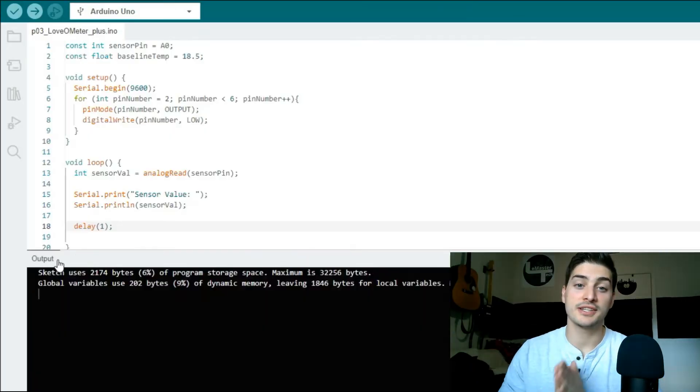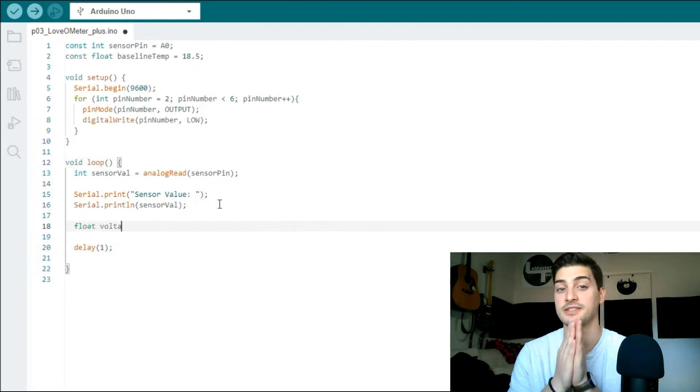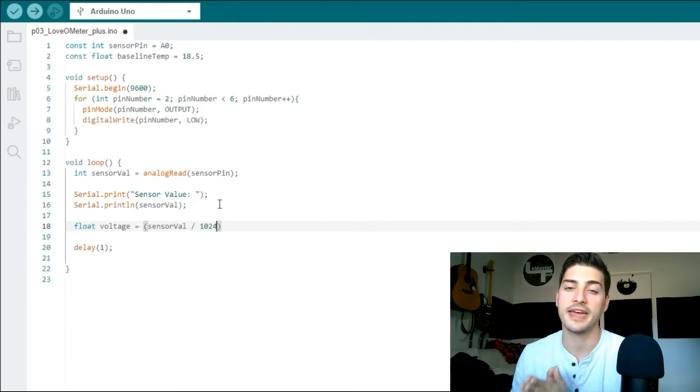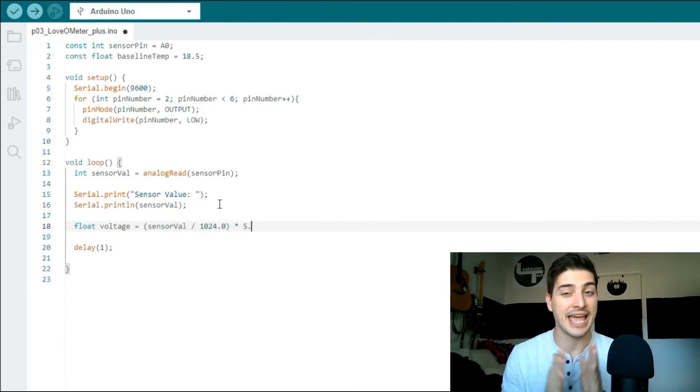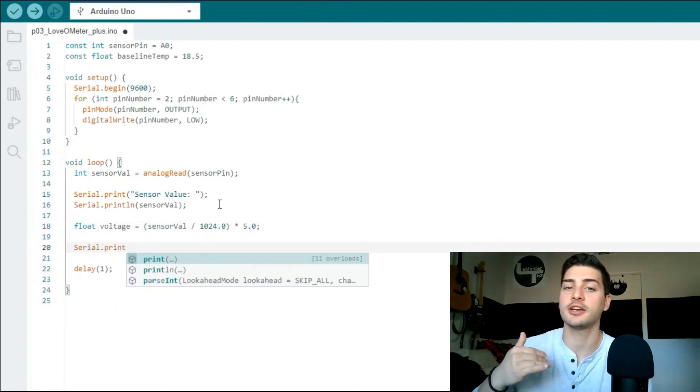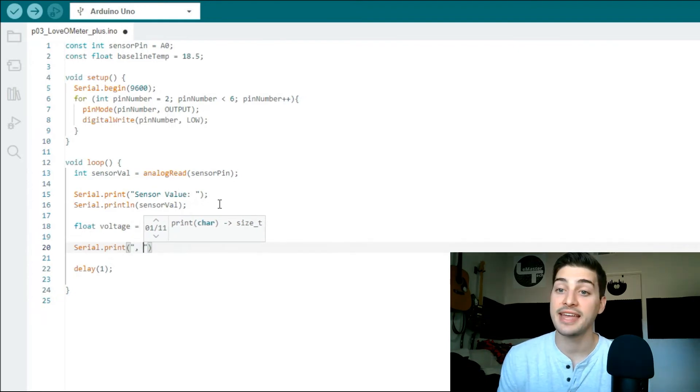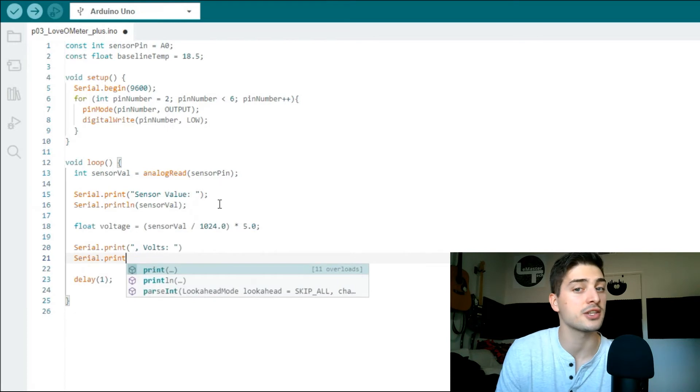We'll calculate the voltage and temperature the sensor is reading next. Arduino analog input channels read a range of 0 to 5 volts over a raw signal value of 0 to 1024, which correlates to a 10-bit integer. Therefore, to get voltage as a float variable, divide our raw signal by 1024 and multiply by 5. Then, set up another two serial print commands to show voltage right next to the raw value.